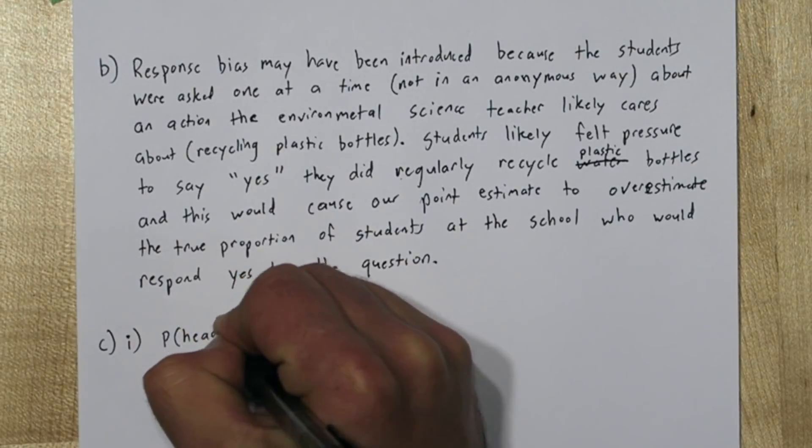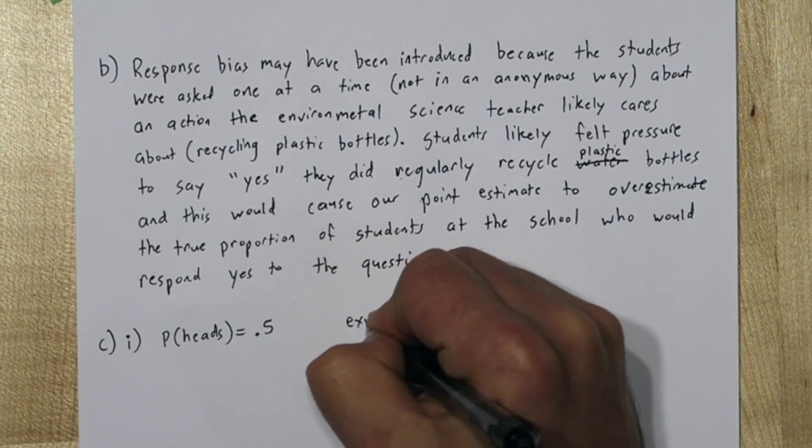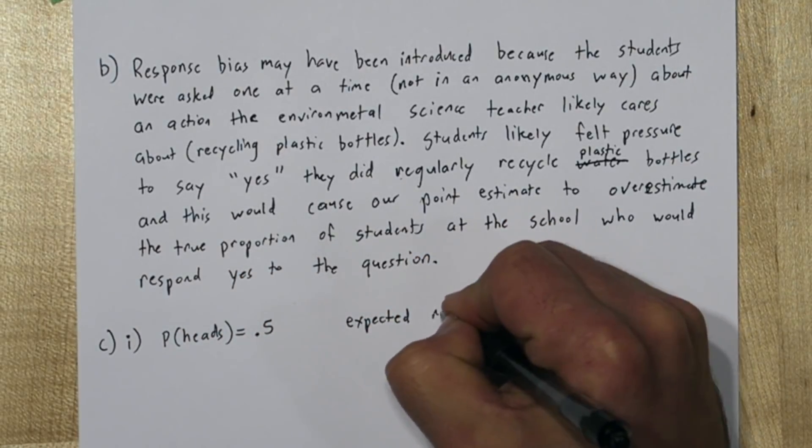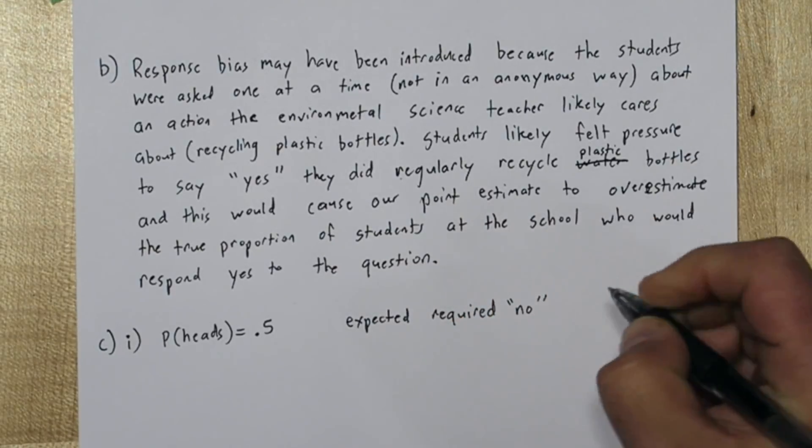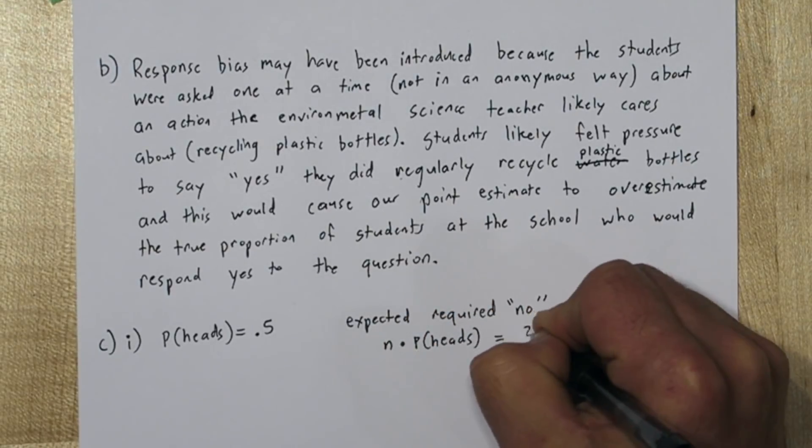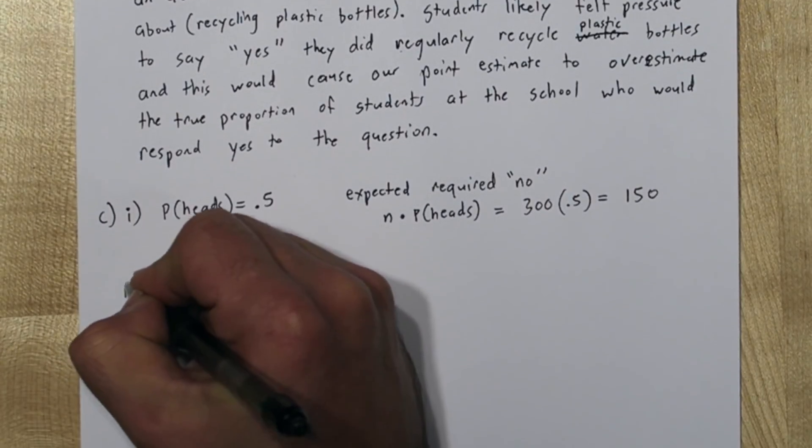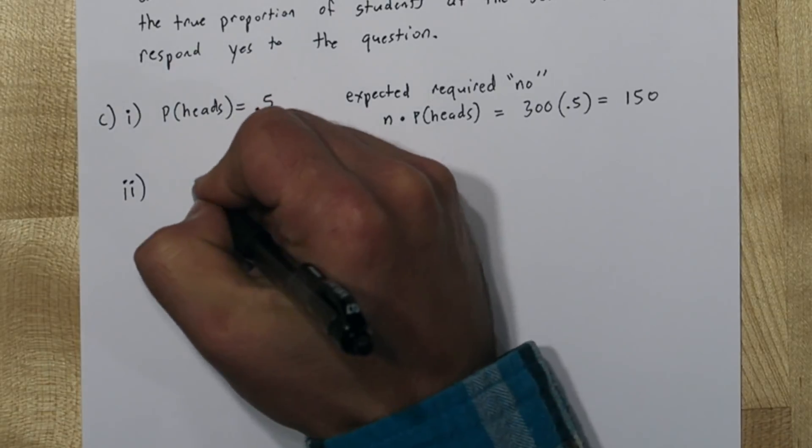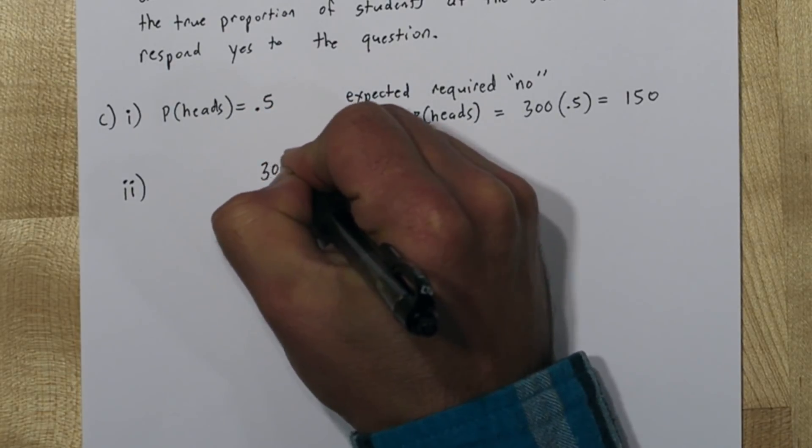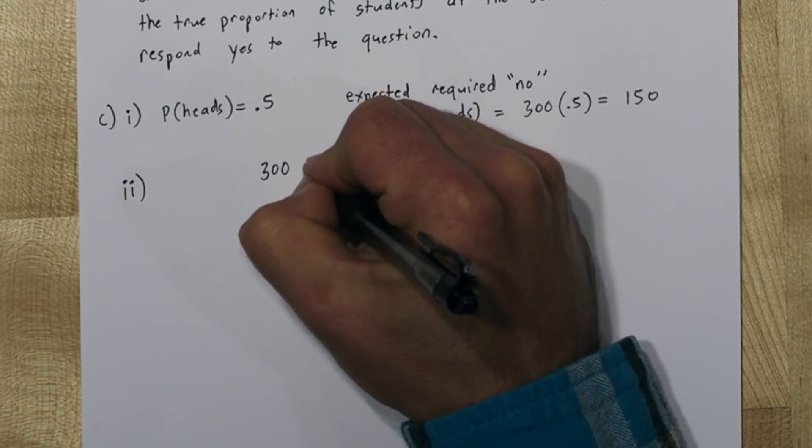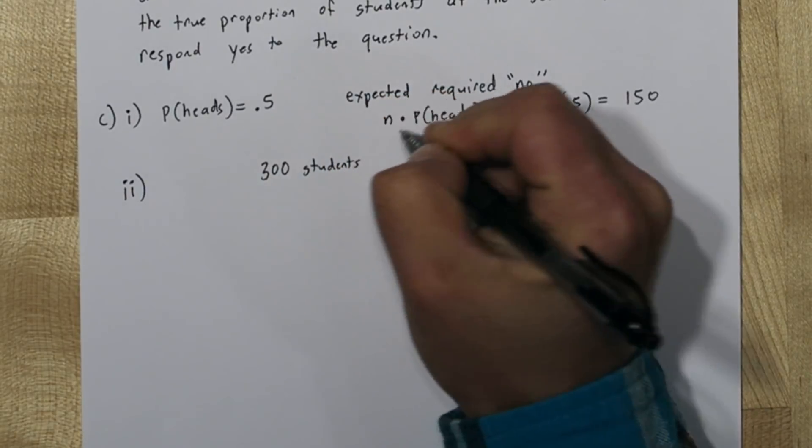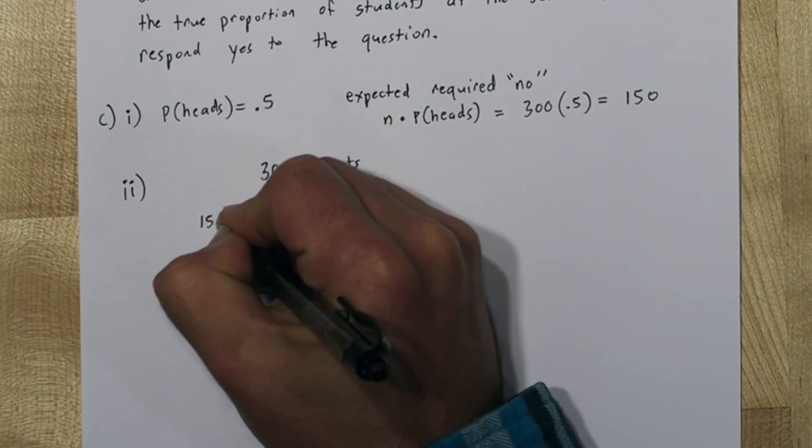Now the first part of part C was probably the easiest part of this question. Since the probability of heads is 0.5, the expected required no's would be 300 times 0.5, so 150. Now the second part of part C is pretty tricky. Let's start by dividing our sample into two parts. We'd expect 150 of our 300 students to just say no. We'll call them the forced no group.